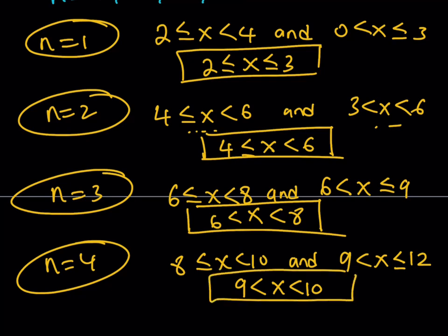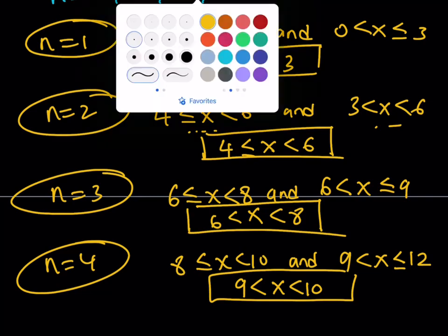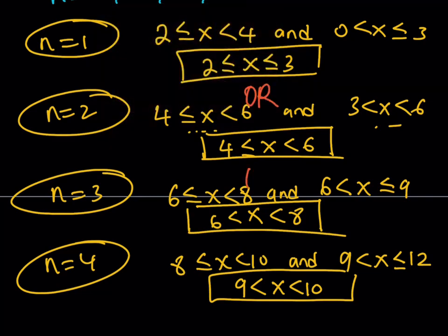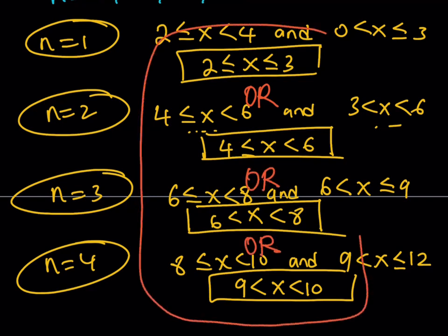So we have four inequalities as solutions. Notice that x can sometimes be an integer: x equals 2, 3, 4, 5, and 7 are all integer solutions. You can go back to the original problem and verify each. Combining everything with 'or', our complete solution set is: 2 ≤ x ≤ 3, or 4 ≤ x < 6, or 6 < x < 8, or 9 < x < 10.